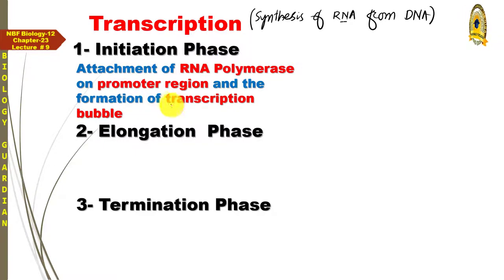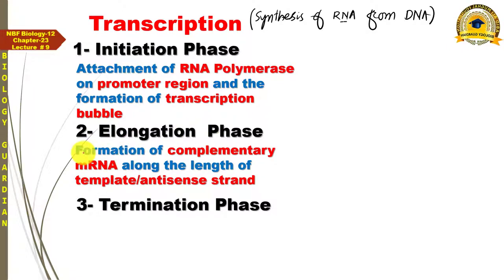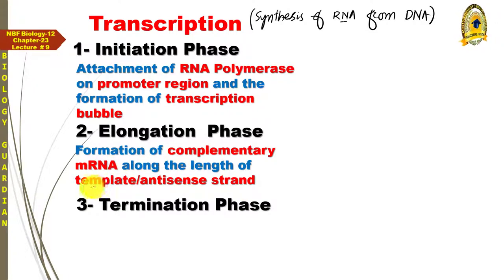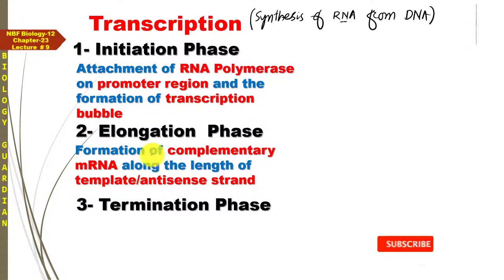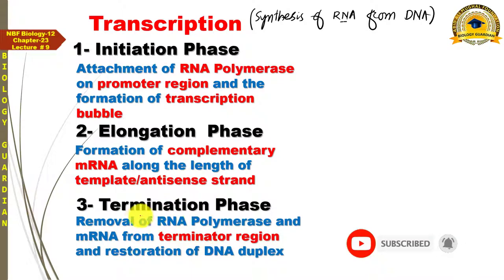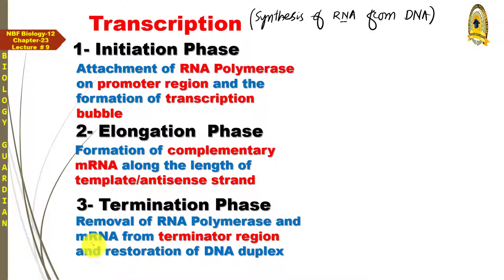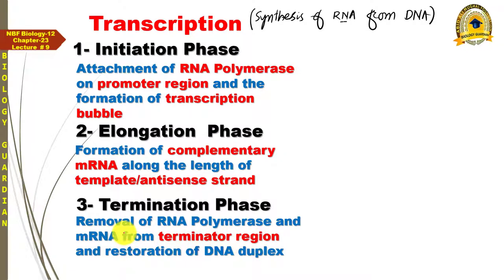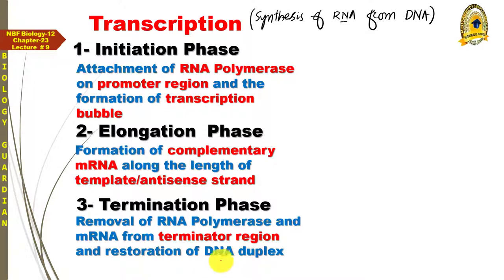Elongation phase میں: formation of complementary mRNA along the length of template or anti-sense strand۔ یہاں complementary mRNA اور template یا anti-sense strand کو بھی سمجھنا ہے۔ Termination phase میں: removal of RNA polymerase and the mRNA from the terminator region, and the restoration of the DNA duplex۔ RNA polymerase جو mRNA کو بنا رہا تھا وہ دونوں terminator region سے remove ہو جائیں گے اور DNA اپنی original duplex state میں واپس آ جائے گا۔